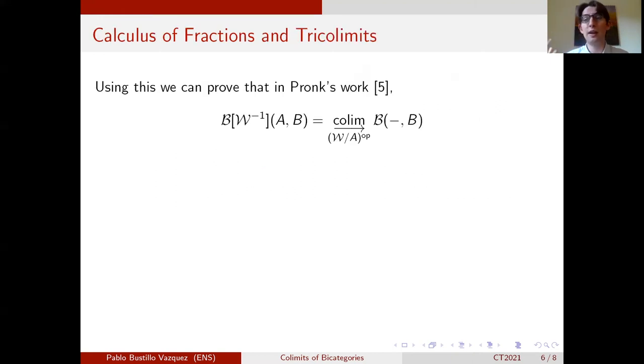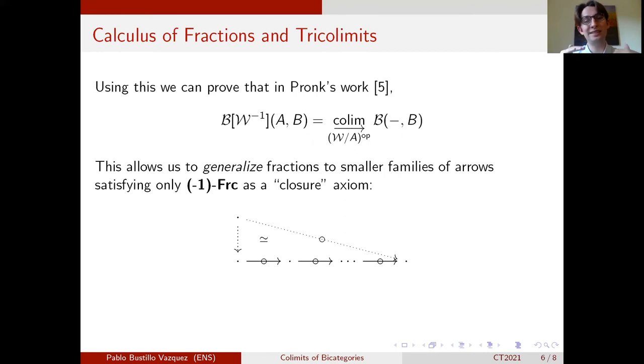Using this new larger family of colimits we can now generalize Gabriel and Zisman's result to dimension two. So if you take a bicategory of fractions you can express its hom categories as filtered pseudocolimits of categories. This actually is helpful because it allows you to generalize the notion of calculus of fractions to a slightly larger setting.